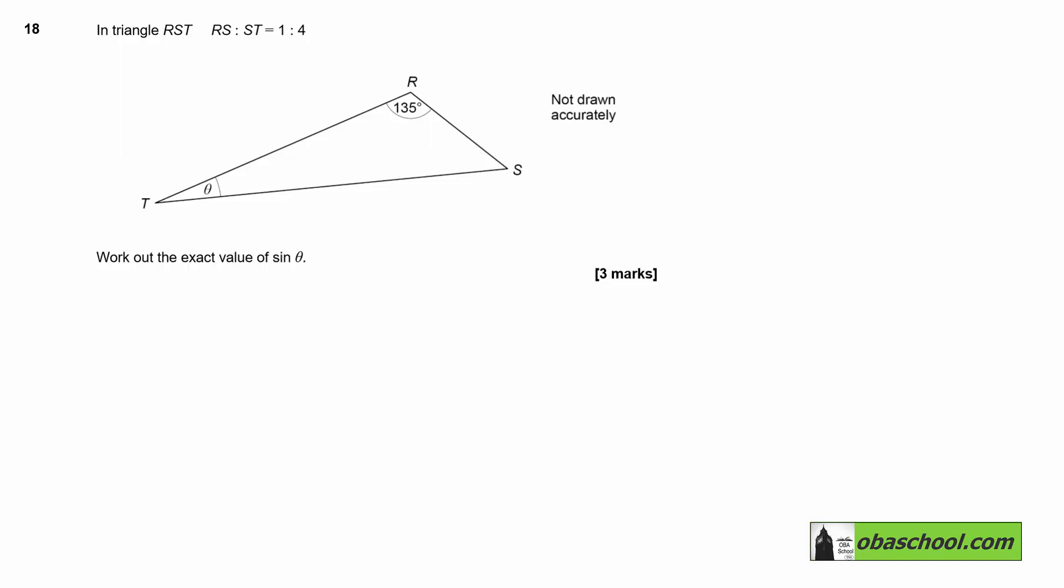In triangle RST, the length of side RS to the length of side ST is 1 to 4. Since we have no length measurements, we may as well say the length of this one is 1 and the length of this one is 4. Work out the exact value of sine θ.